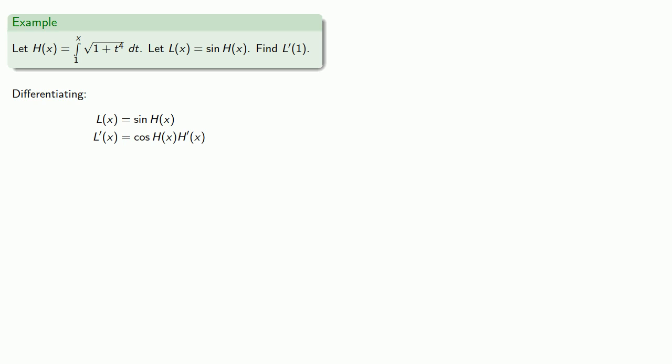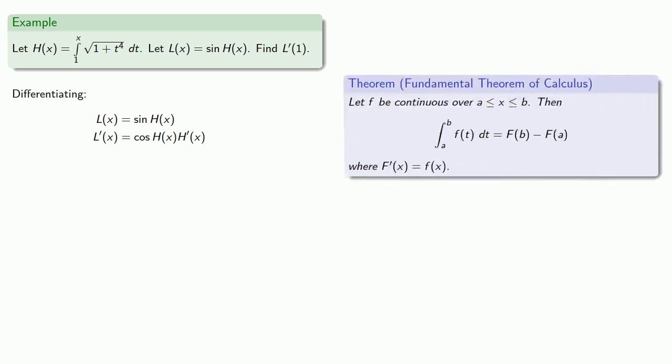Now, we do need to find h prime of x, so we'll pull in our Fundamental Theorem of Calculus. h of x is going to be g of x minus g of 1, where g prime of x is the integrand. Again, since g of 1 is some particular constant value, the derivative will be g prime of x, and we know what that's equal to.